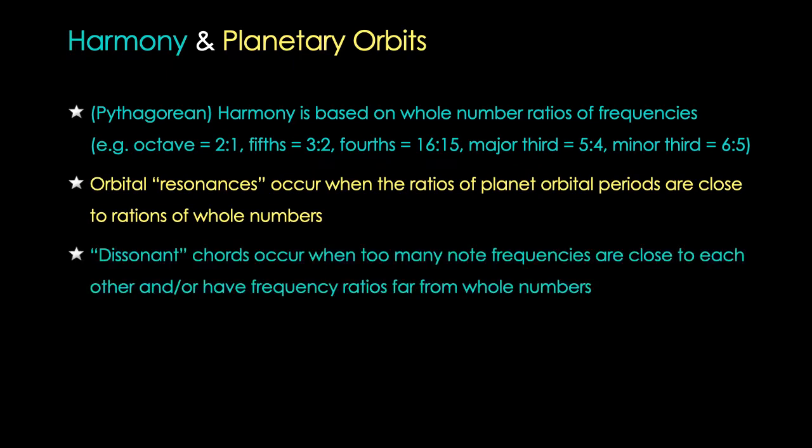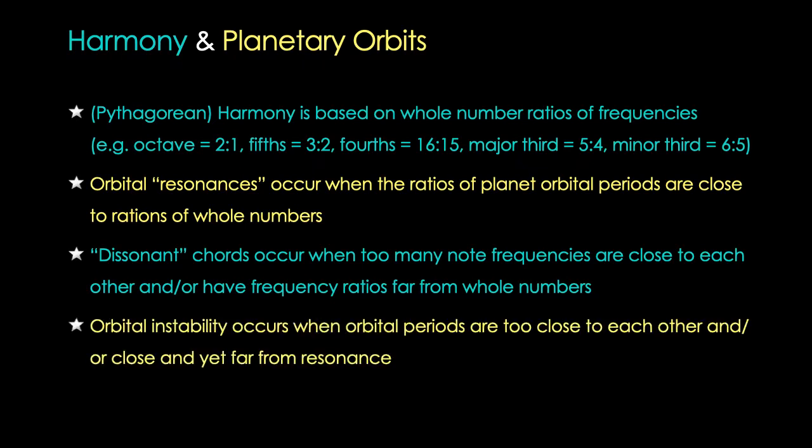In musical theory, dissonant chords occur when the frequencies of the notes are too close to each other, or when the frequency ratios are not ratios of whole numbers. And in orbital dynamics, instability occurs if the orbital periods get too close to each other, or are close but simply are not in resonance.